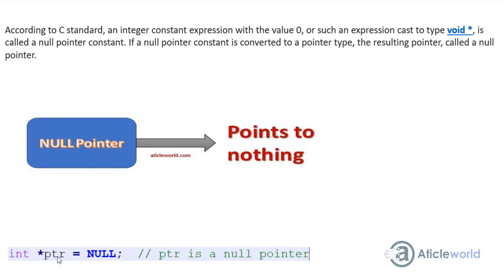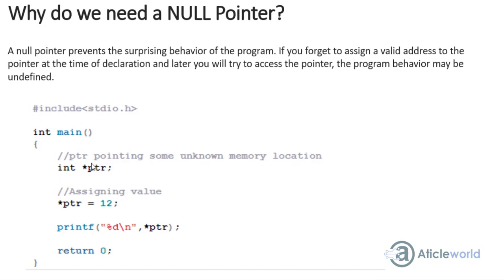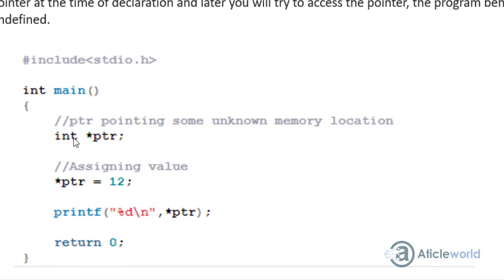If you are a fresher or beginner using the null pointer for the first time, one question that comes to mind is: what is the requirement of null pointer in C programming? Let's understand an example to see why we need null pointers. Here I have already taken a code snippet where I declare an integer pointer PTR and assign some value to it using the dereference operator. If you are a beginner and don't know how to assign a value to a pointer, you can see my first video — introduction to pointers — I'll mention the link in the description.